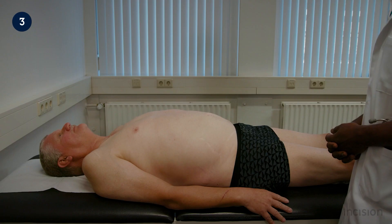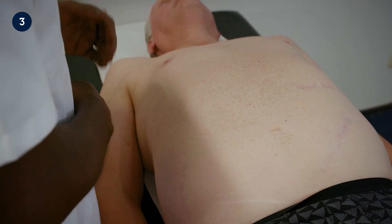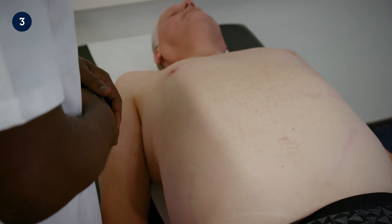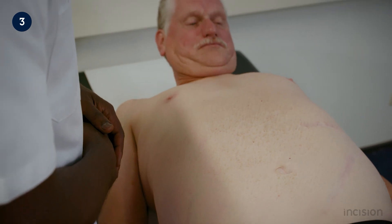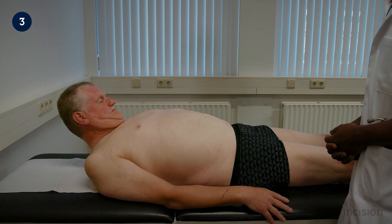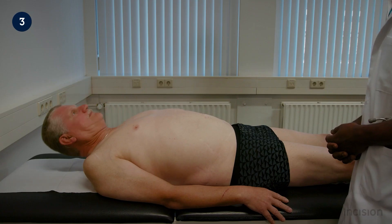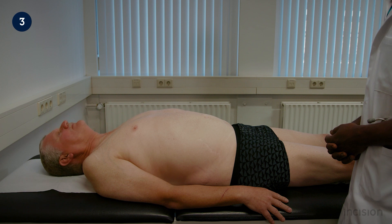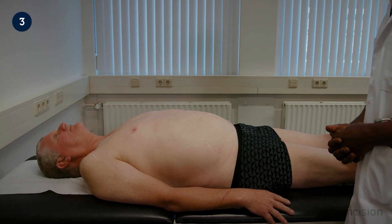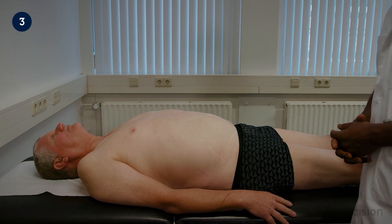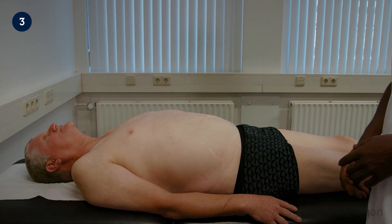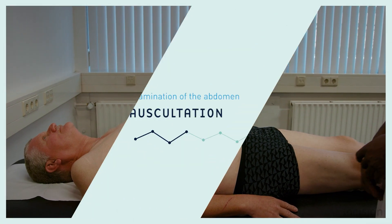Similarly, inspection can be performed as the patient is asked to cough or lift their head off the bed, increasing intra-abdominal pressure and stretching the parietal peritoneum, looking to evoke sudden pain or discomfort suggesting peritoneal irritation and observing for any bulging suggestive of herniae.